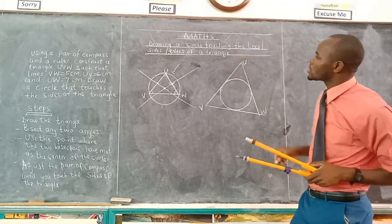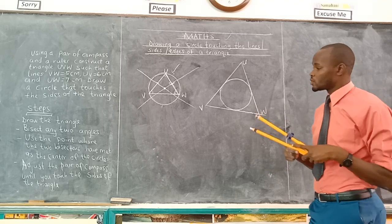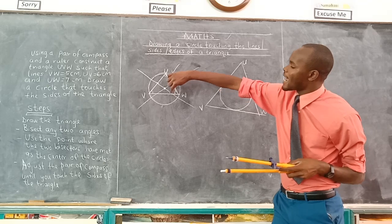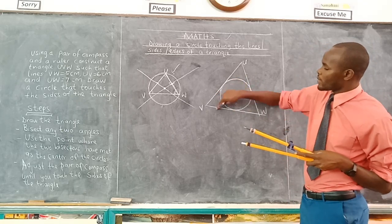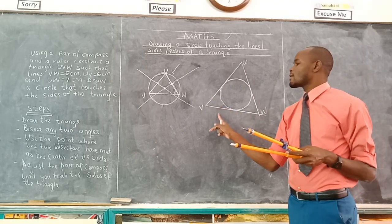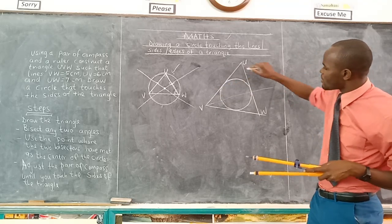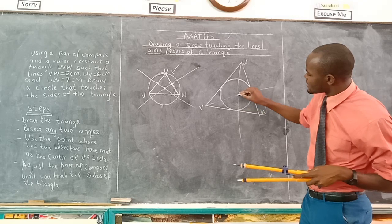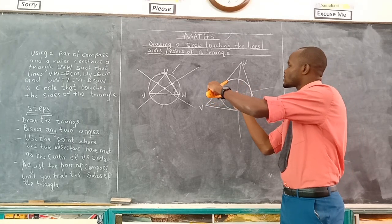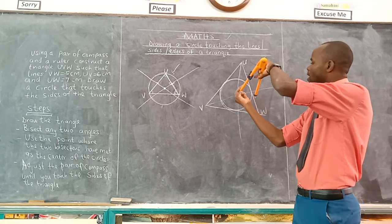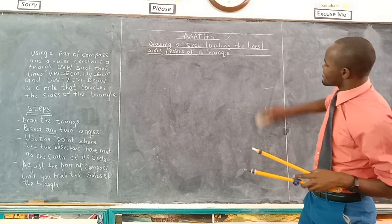On the other hand, this is our subtopic today — drawing a circle touching the sides of the triangle. Remember we said you bisect the lines because the lines are outside when comparing the angle, since you want to draw a circle outside. In this case, you want to draw a circle which is inside. When comparing the lines and the angle, what is inside? The angle is inside, the lines are outside. Since you want to draw a circle inside the triangle, you bisect the angles. That is the difference between a circle touching the vertices and a circle touching the sides or lines.